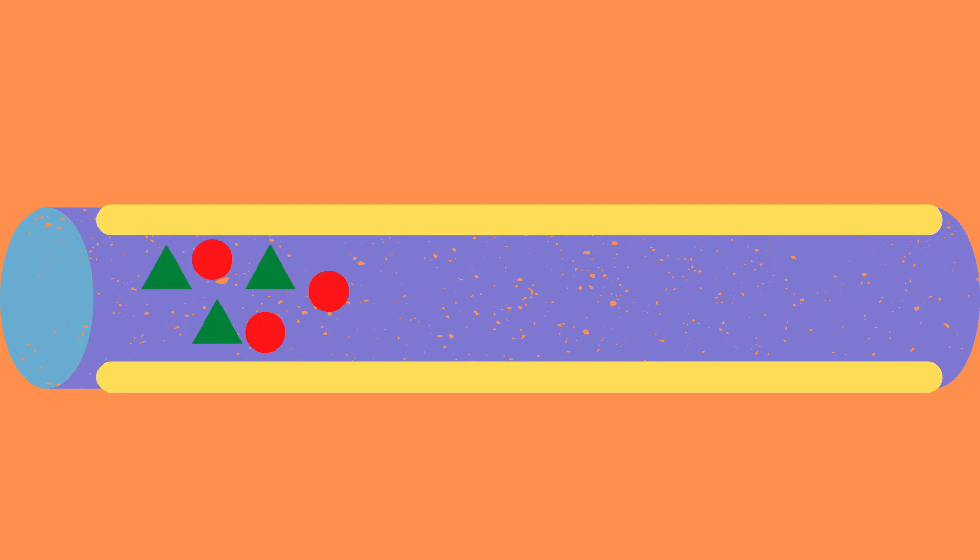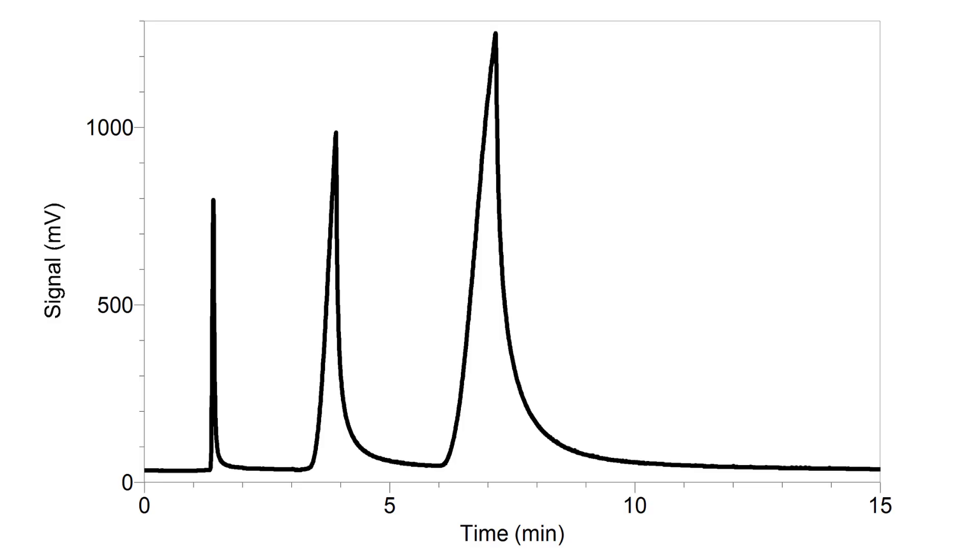In addition, more volatile compounds get separated more quickly than less volatile compounds. After these compounds have been separated from one another they exit the column one by one, and when they do so they are detected and the results are displayed in a gas chromatogram.